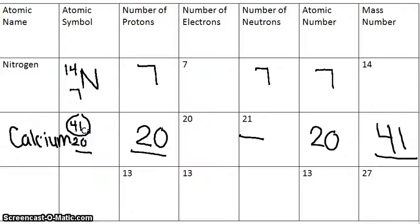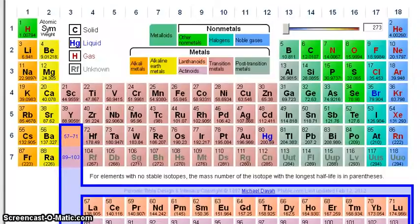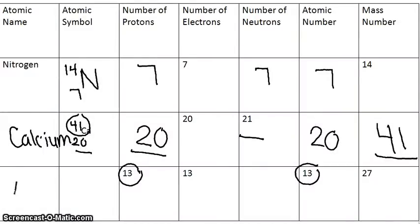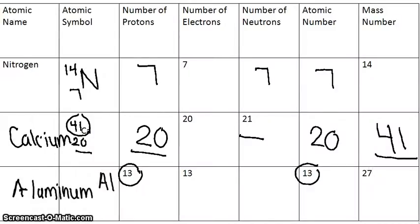On our last example, we aren't given anything to identify which atom we're dealing with. So you go to your number of protons, which is 13, and your atomic number, which is 13. You go to your periodic table and look for 13 — we have 13 right here. The atomic name for 13 is aluminum. The atomic symbol is Al. You know that your number of neutrons is your mass number minus your number of protons, which gives you 14 neutrons.